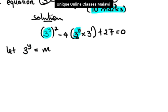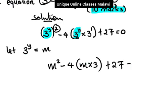So here we'll have m, here we'll have m squared, and we take minus 4 open the bracket, m times 3 close the bracket plus 27 equals zero.